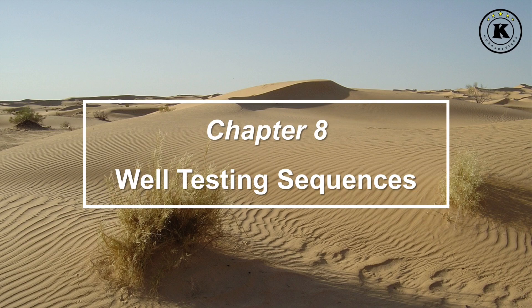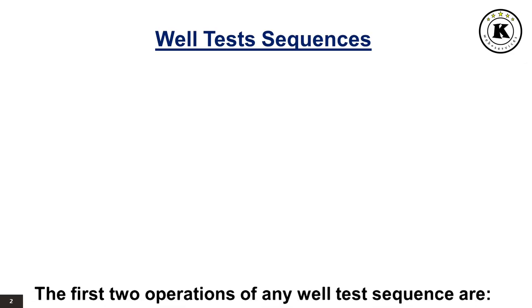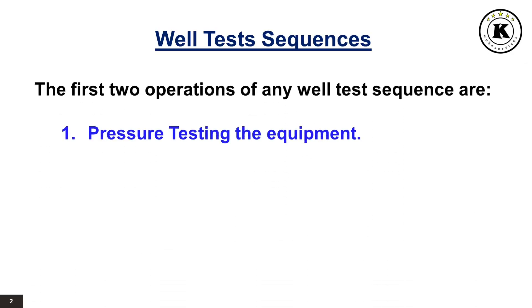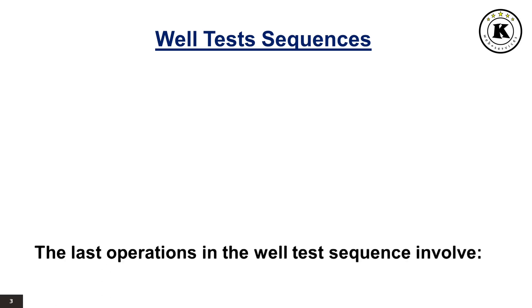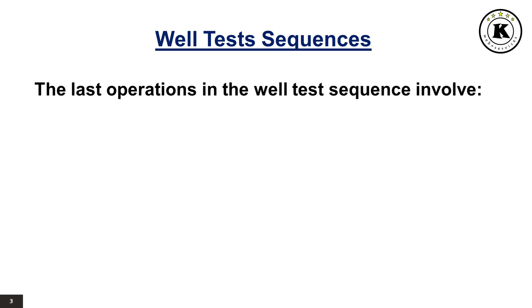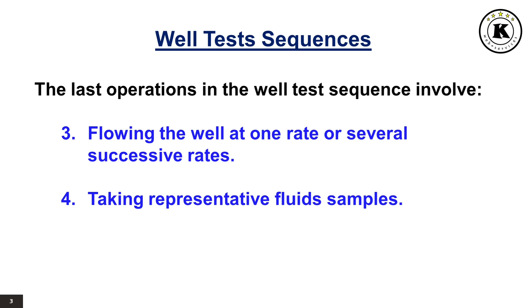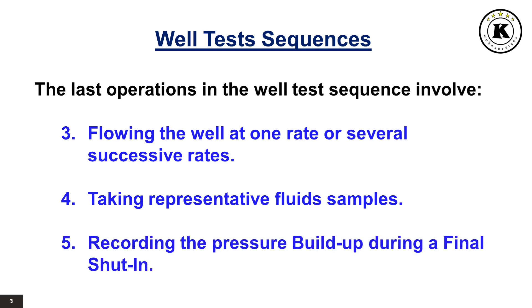Chapter 8: Well Testing Sequences. The first two operations of any well test sequence are pressure testing the equipment and cleaning up the well. The last operations involve flowing the well at one rate or several successive rates, taking representative fluid samples, and recording the pressure buildup during a final shut-in.